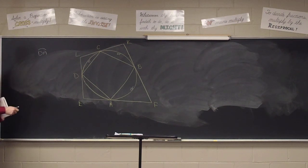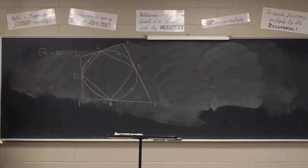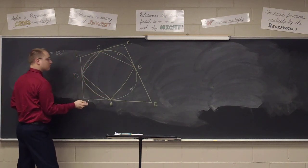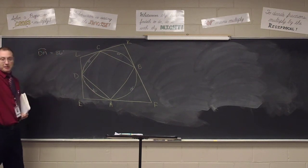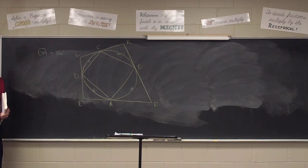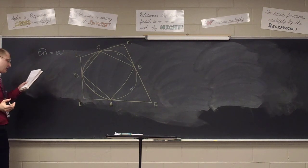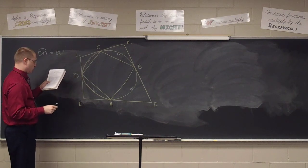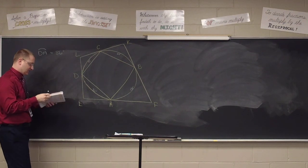Quentin, what did you get? Add all three arcs and subtract from 360. Good — we know 360 degrees total, we've got all the other ones, so let's add them up and subtract to get 86 degrees. How many have that same answer for the missing arc? Any questions on that first answer?